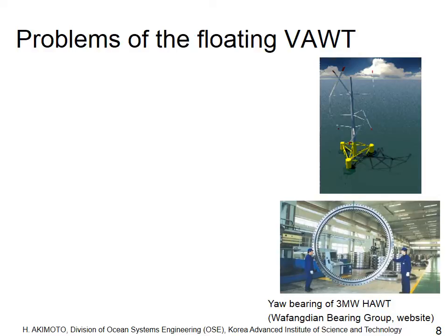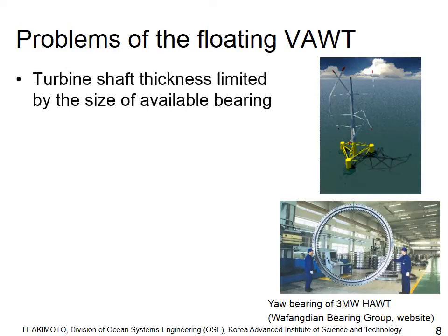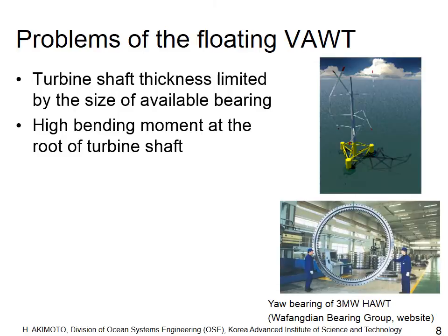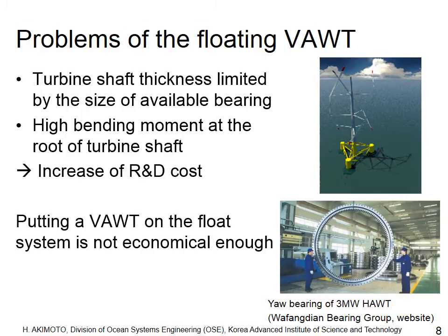Although the floating vertical axis wind turbine has some merits, there are remaining problems. The thickness of the turbine shaft is limited by the size of available bearings, which means scaling up this turbine is not easy. High bending moments appear at the root of the turbine shaft. These mechanical problems are not easy to solve and will increase the cost of the vertical axis wind turbine. Therefore, simply putting a vertical axis wind turbine on a float system is not economical enough.